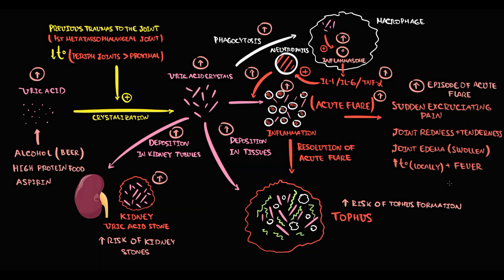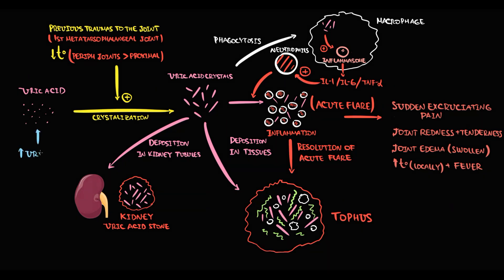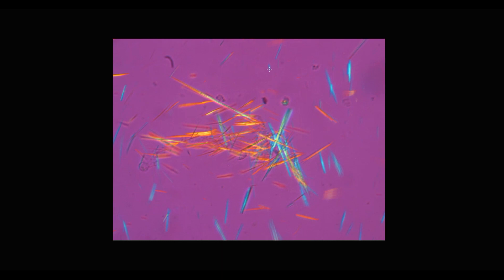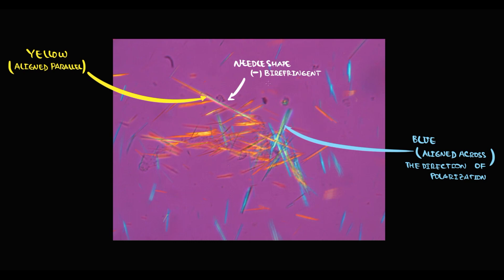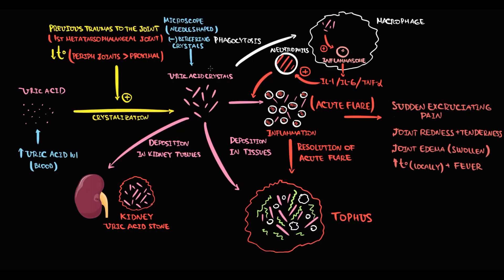To diagnose gout, we first determine uric acid level in the blood. We can also take joint aspiration and on microscopy determine needle-shaped negatively birefringent crystals. Here we see a sample of joint fluid with needle-shaped negatively birefringent crystals. When uric acid crystals are aligned parallel to the ray of light they appear yellow, and when aligned across the direction of polarization they appear blue. Simply speaking, negatively birefringent means we see yellow-blue colored crystals.